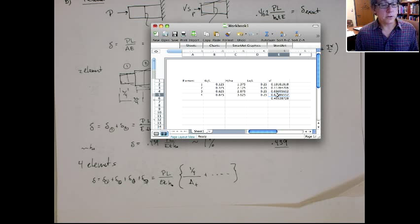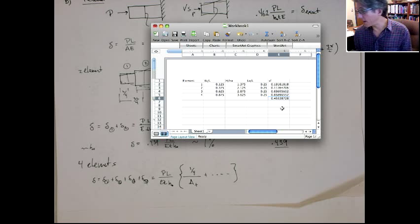And basically, these are proportional to the stiffness of the element. You can see the fourth element is much different than the first element because there's a bigger cross-sectional area. When you sum them all up, that's what you get. So that's basically our answer.